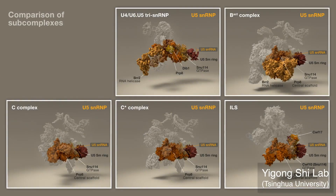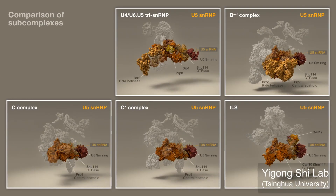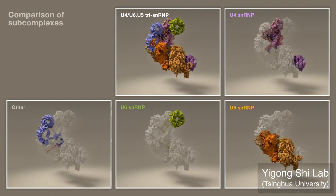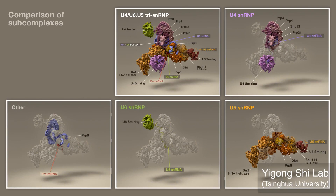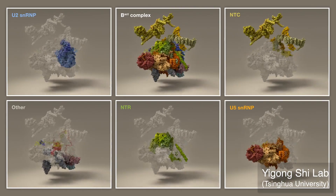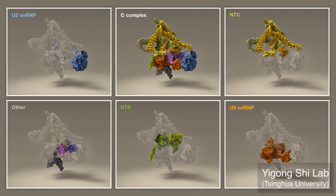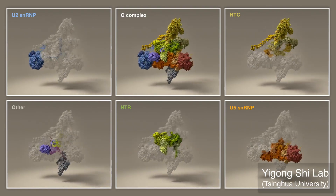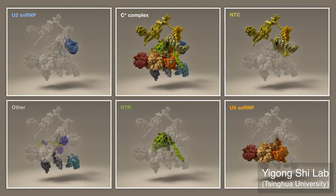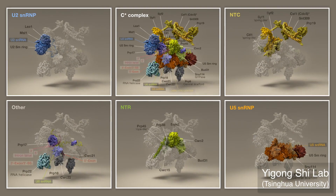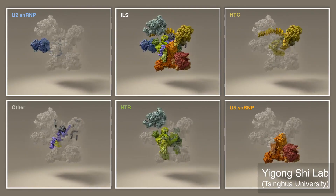PRP8 belongs to the U5 snrp. This segment compares spliceosomal subcomplexes further: the assembly particle U4-U6-U5 tri-snrp; B-ACT, which incorporates NTC, NTR, and other subcomplexes; C-complex, which incorporates step 1 factors; C-star, which incorporates step 2 factors; and the ILS, the intron lariat spliceosome.